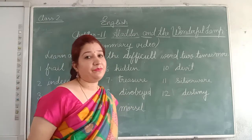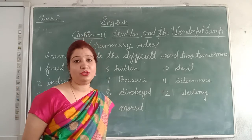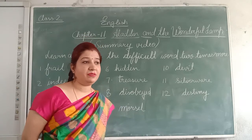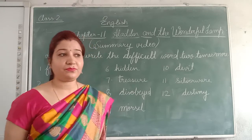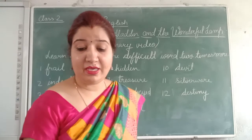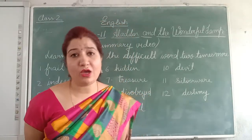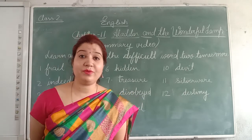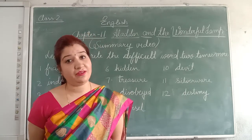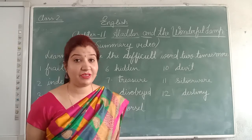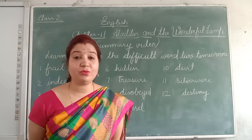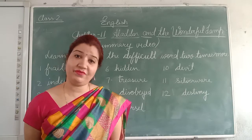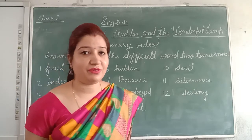Now what happens? Aladdin just goes to the town. There he met an old man who claims to be his uncle. What happens further in the story, you will come to know in the explanation video of this chapter.